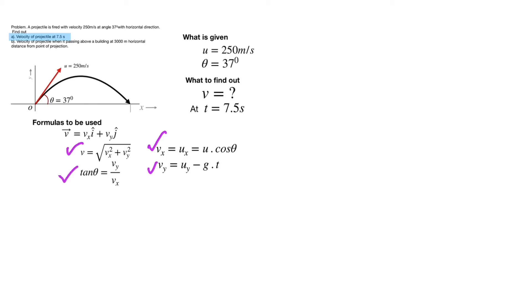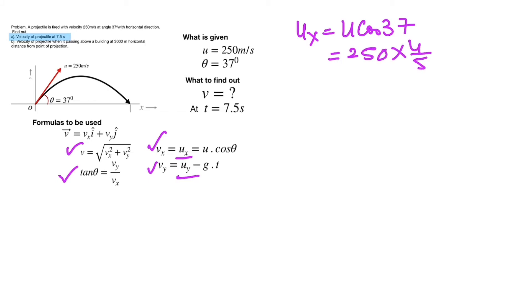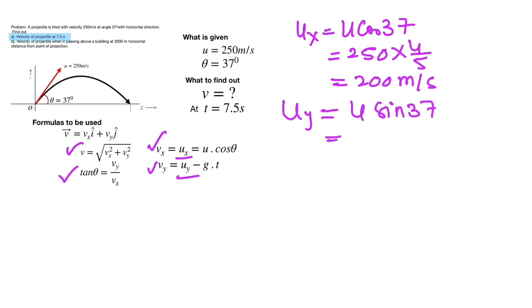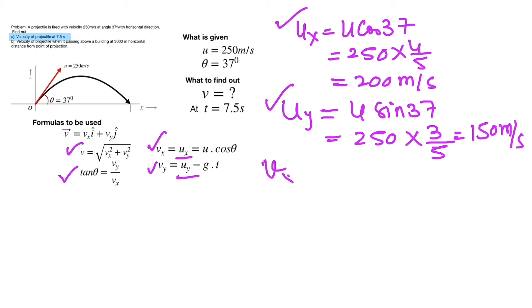To find vx and vy, we first calculate the initial velocity components. ux = u·cos(37°) = 250 × (4/5) = 200 m/s. Similarly, uy = u·sin(37°) = 250 × (3/5) = 150 m/s. Now vx equals the constant horizontal velocity, which is ux = 200 m/s.